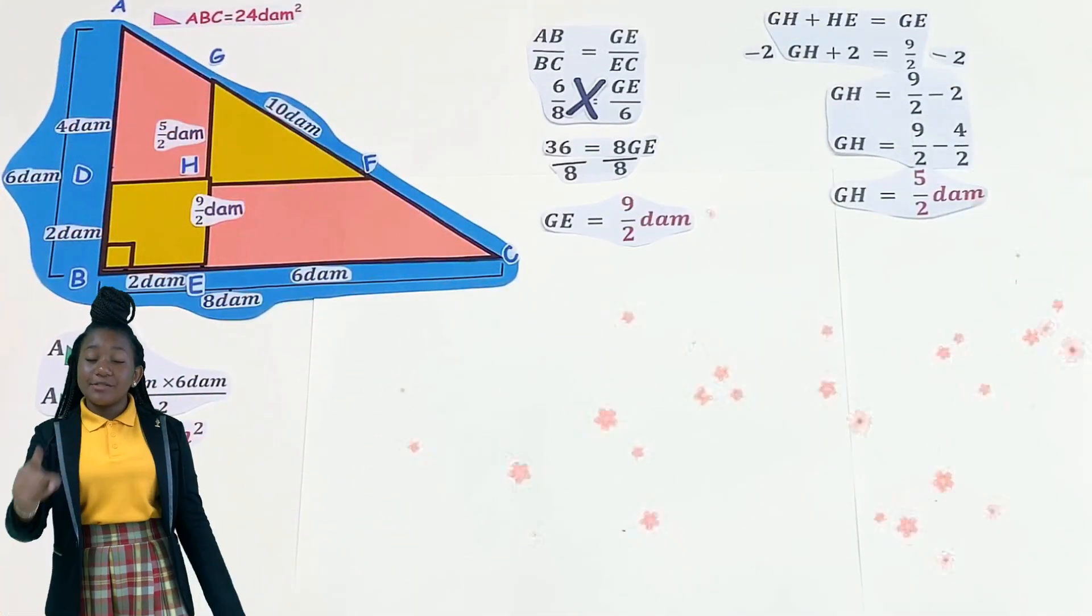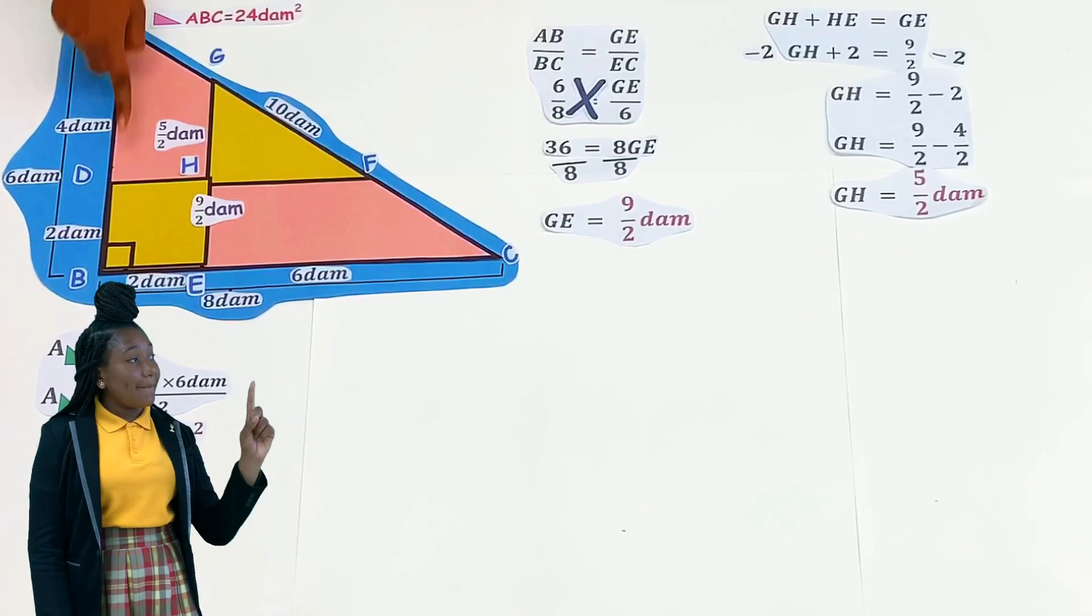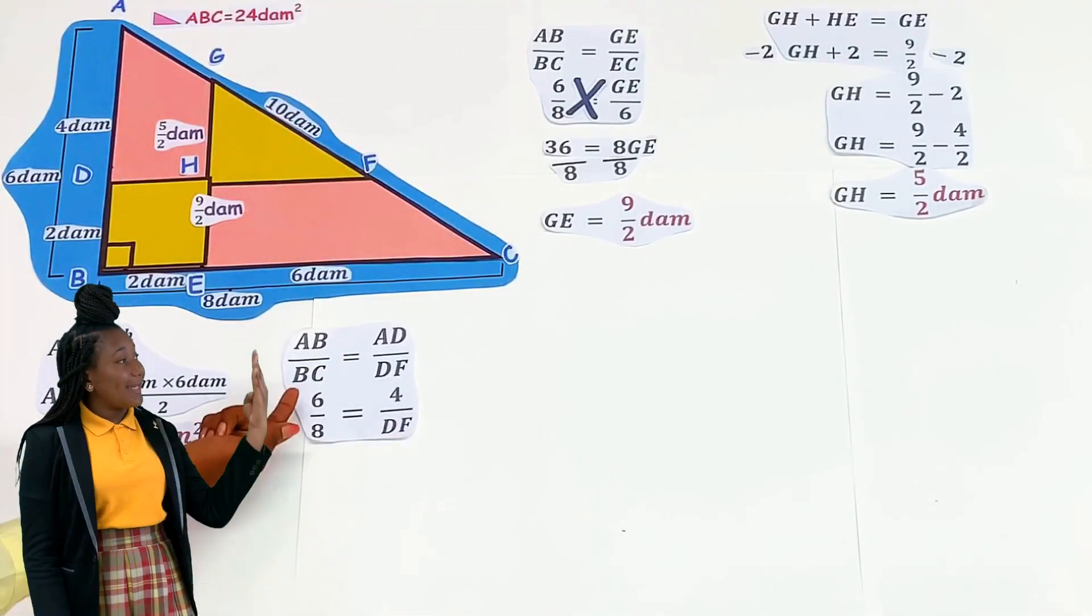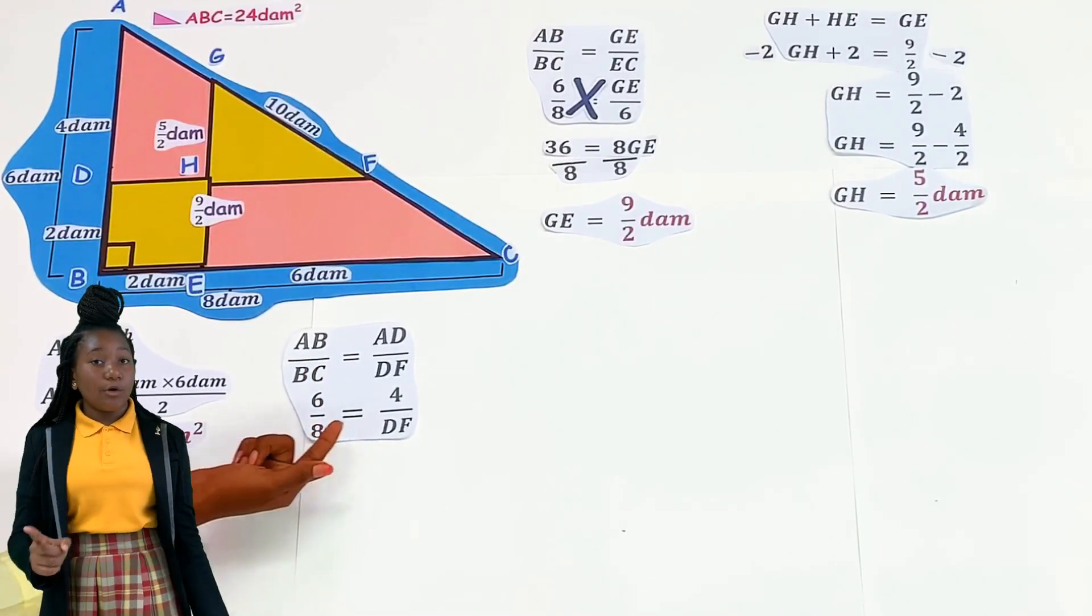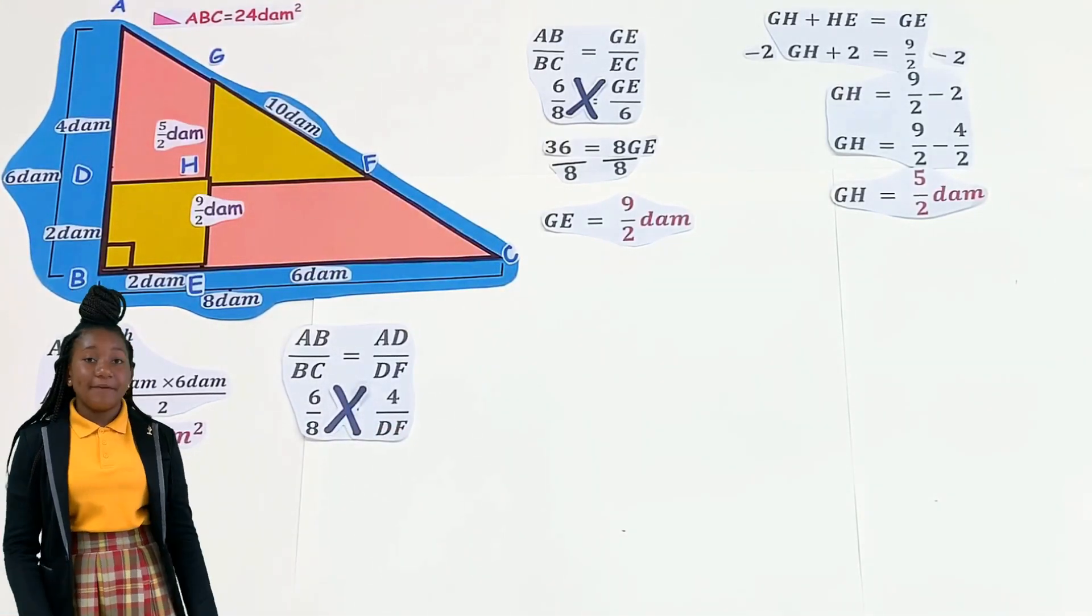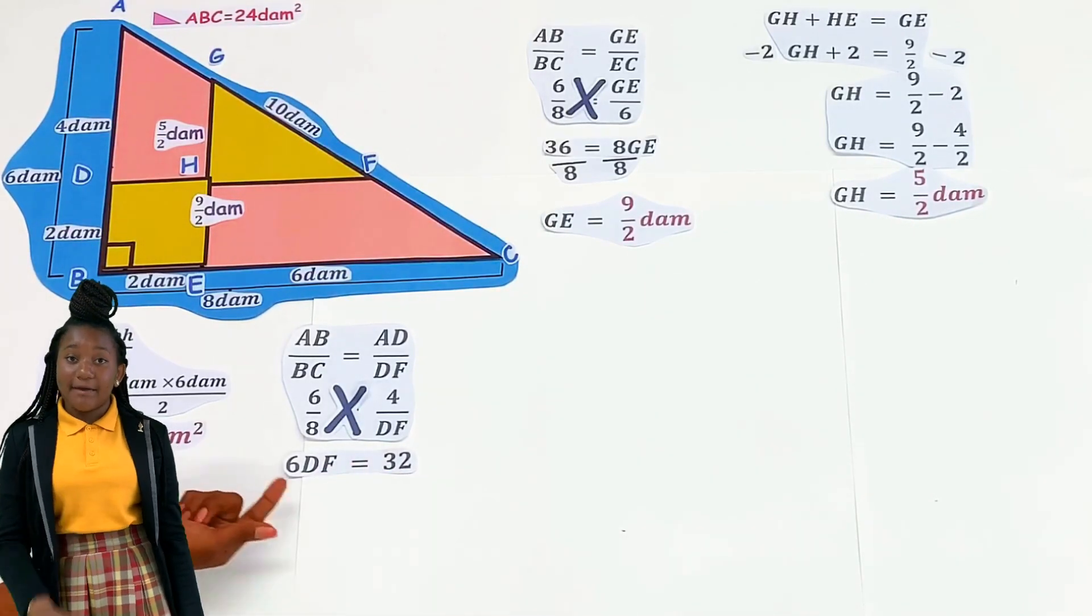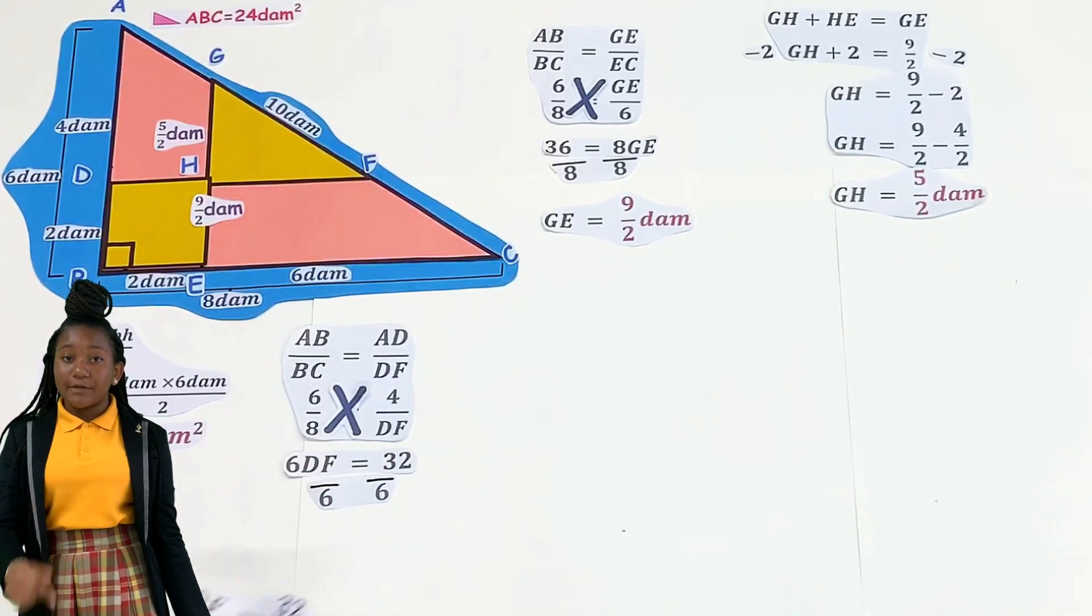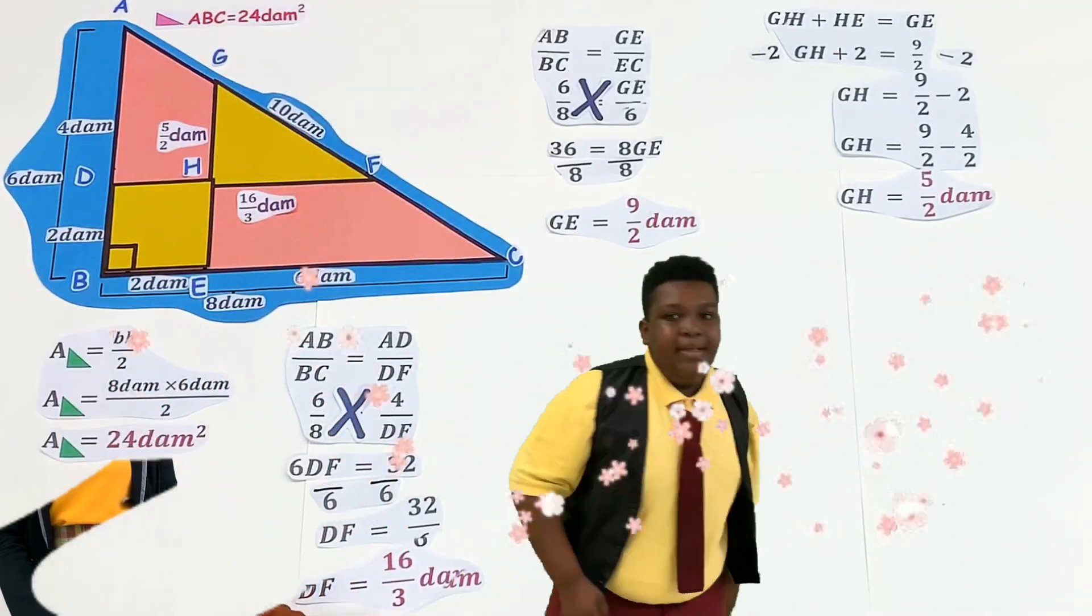Outstanding! We will do the same in finding the measurement of HF. Consider similar triangles ABC and ADF. We know that AB over BC is equal to AD over DF. Substituting the lengths, 6 over 8 is equal to 4 over DF. Cross multiply, 6 times DF is 6DF and 4 times 8 is 32. To isolate DF we divide both sides by 6. DF is equal to 32 over 6 or simply 16 over 3.